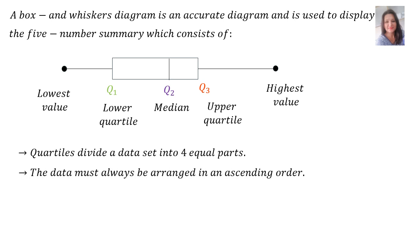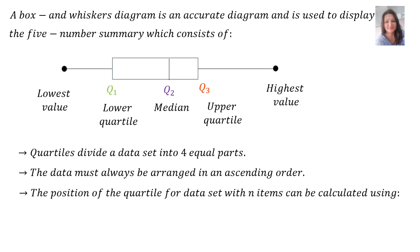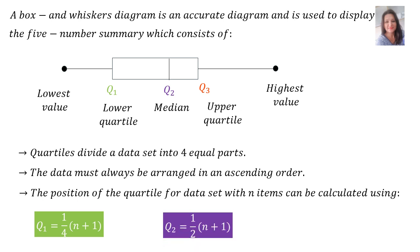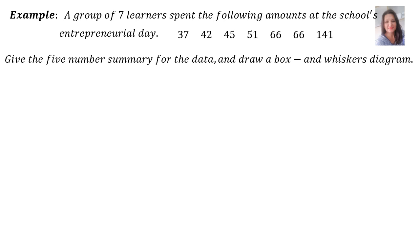The data must always be arranged in ascending order — that means from small to big. The position of the quartile for a data set with n items can be calculated using formulas. To find Q1 (the lower quartile), use: a quarter times (n + 1). For Q2 (the median): half times (n + 1). For Q3 (the upper quartile): three quarters times (n + 1).